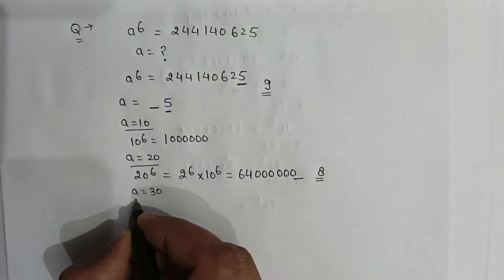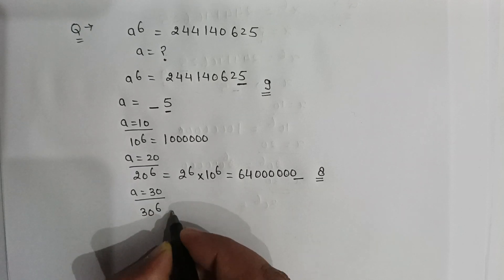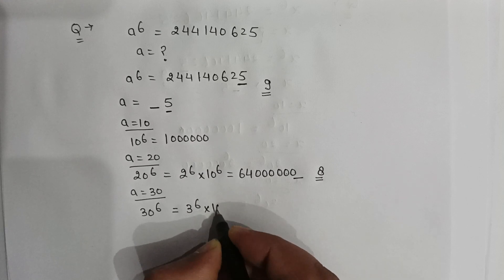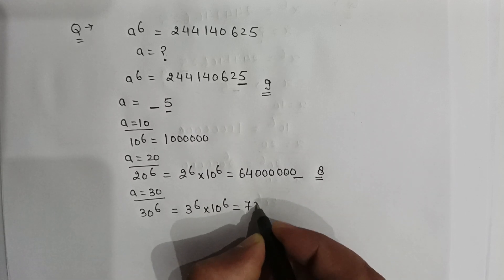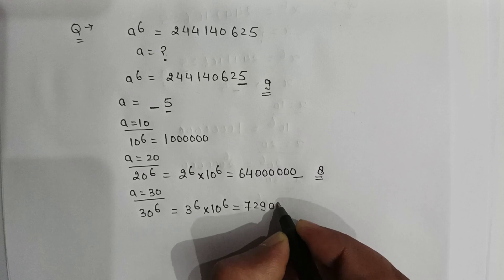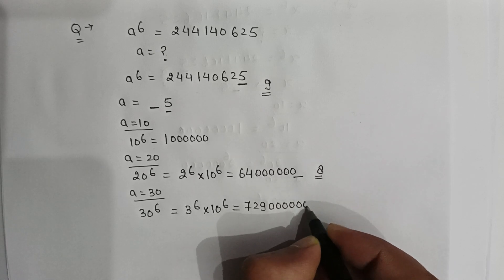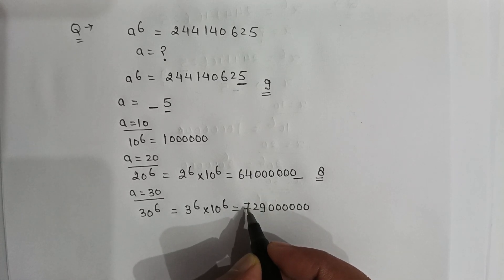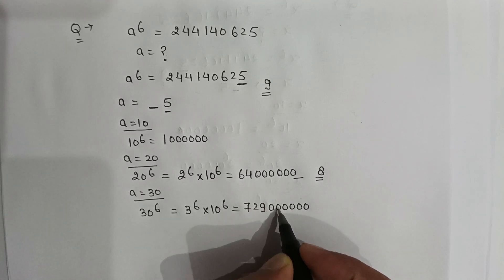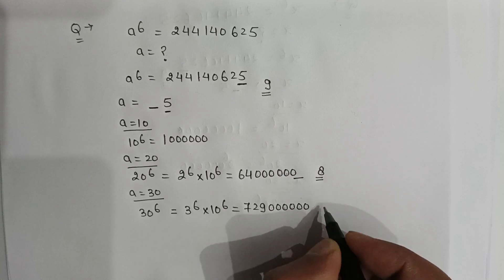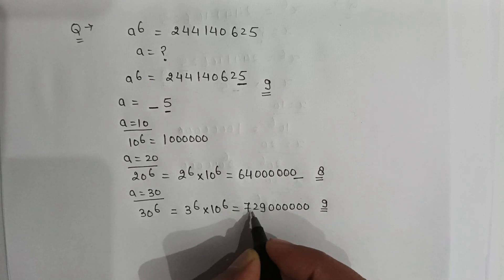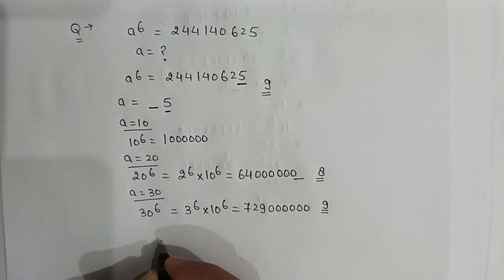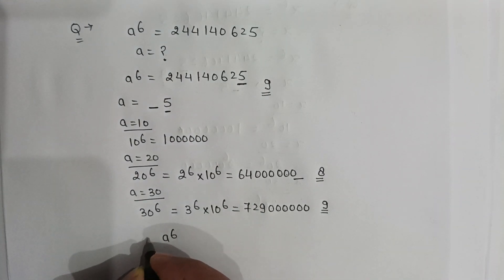If we put a equal to 30, then 30 to the power 6 is equal to 3 to the power 6 multiplied by 10 to the power 6, which equals 729,000,000,000. The number of digits in this number is 12, and this number is larger than the given number.